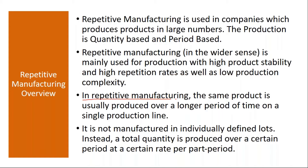Repetitive manufacturing is mainly used for production with high product stability — normally only one or two products — and high repetition rates as well as low production complexity. You are repeating the same product continuously. Examples include cement or sugar manufacturing industry, where they produce the same product continuously with no product changeovers. They will go for REM — repetitive manufacturing.